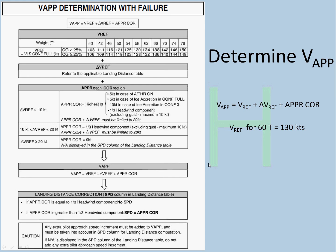Now we enter to find V approach. V approach has the formula: V approach = V ref + Delta V ref + approach correction. Starting with V ref — our weight was given as 60 tons, which falls between the table entries, and CG is 25%. This is for config full, keep in mind. So for 60 tons, V ref comes out to be 130 knots.